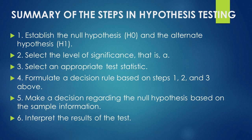Here is a summary of the six steps. Step 1: establish the null and alternative hypothesis — make an assumption. Step 2: select the level of significance — a very important step. Step 3: select an appropriate test statistic; the Z formula equals X-bar minus mu over sigma over the square root of n. Step 4: formulate the decision rule based on steps one, two, and three. Step 5: make a decision regarding the null hypothesis based on sample information, comparing computed and critical values. Step 6: interpret the results of the test.